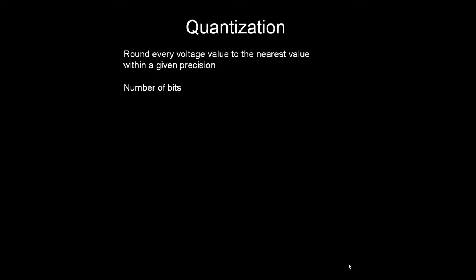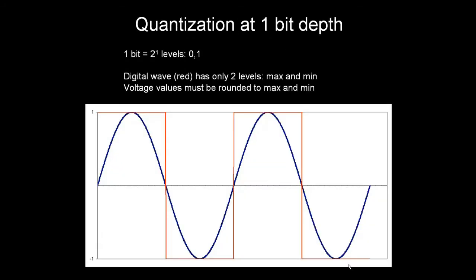The second term is quantization. It means that we cannot store all values at the highest precision. We must round all values to the nearest value within a given precision. This is called bit depth, or the number of bits. In this waveform, we are using 1 bit, which means 2 levels: 0 and 1. Positive values are rounded to 1, negative values are rounded to 0.